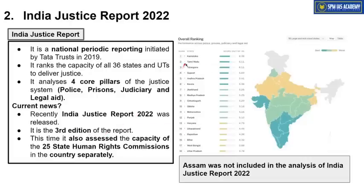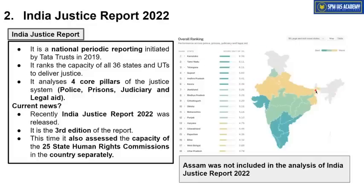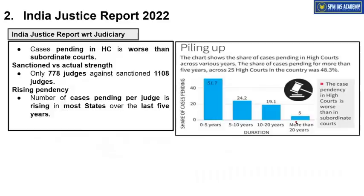According to this report, Karnataka is the best performing state as far as justice, police, prison, and legal aid are concerned, while among larger states, Uttar Pradesh is the worst performing state. Regarding Assam — unfortunately, in this survey, Assam was not covered, so data related to Assam is not available.